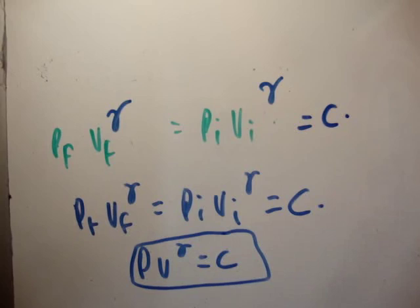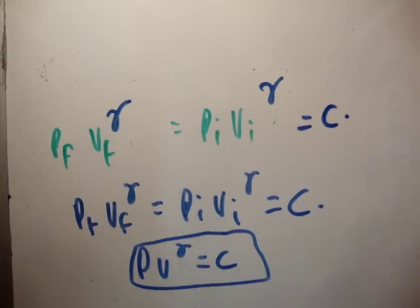So for adiabatic processes — where Q equals zero and you only do compression work — pV^γ is a constant, and that's a very useful quantity in thermodynamics. Thanks for watching; please share with your friends and subscribe to the channel.